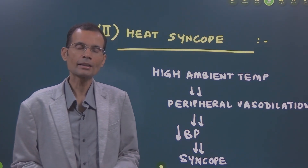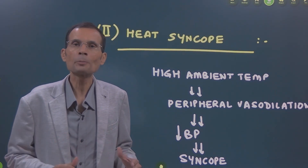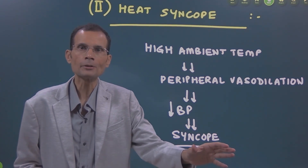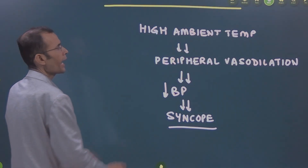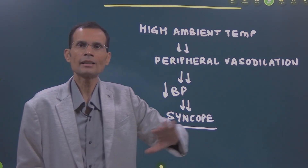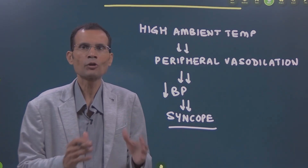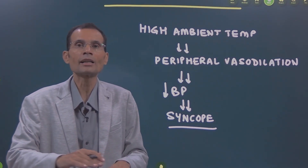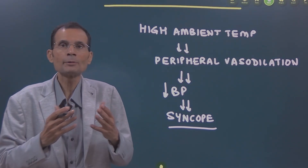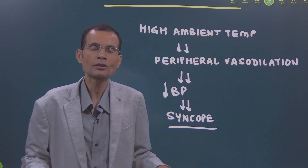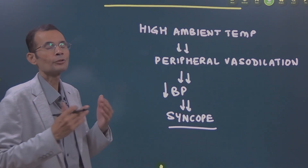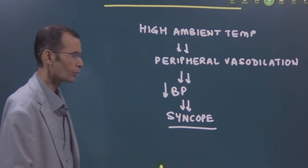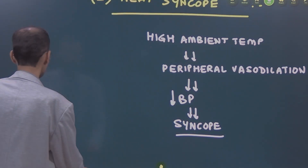The second heat related illness is heat syncope — syncope meaning a fainting attack. What happens here is somewhat similar to vasovagal syncope. When there is exposure to high ambient temperature, it results in peripheral vasodilation, which means there will be pooling of blood in the peripheral parts of the body. Venous return to the heart decreases, leading to decreased cardiac output and blood pressure, decreased cerebral blood flow, and resulting in a syncopal or fainting attack.